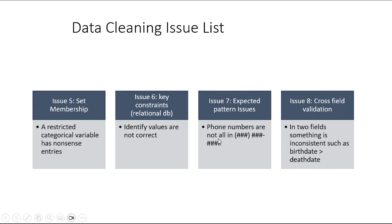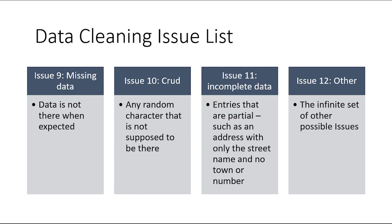Issue seven is pattern issues, which commonly happens with phone numbers and zip codes when the phone numbers aren't typed in in the standard format of parentheses around the area code followed by a seven-digit number. Issue eight is cross-field issues — you have to actually look at both fields. For example, you could have a birth date and a death date where somehow the birth date is entered as after the death date. Or someone could enter that they've been in college for zero years and yet they're a senior, which doesn't make sense.